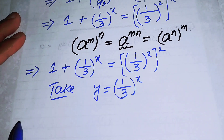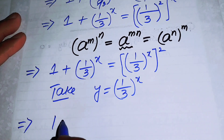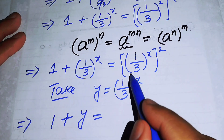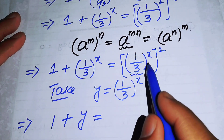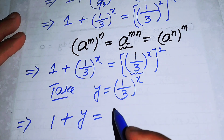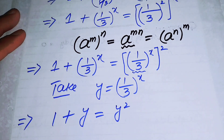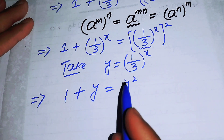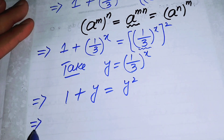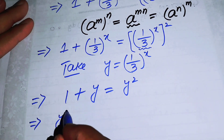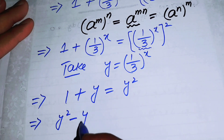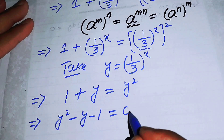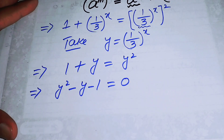With the substitution y = 1/3^x, the expression becomes 1 plus y equals y squared. Moving all terms to one side, we get the quadratic equation y squared minus y minus 1 equals 0.